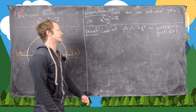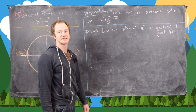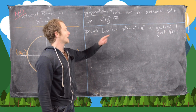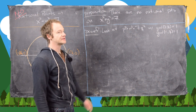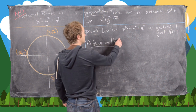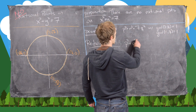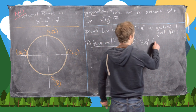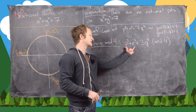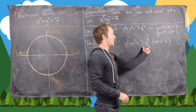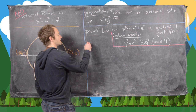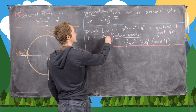We've reduced the problem to: p squared plus r squared equals 7q squared, where GCD(p, q) = 1 and GCD(r, q) = 1. We're going to reduce this modulo 4, giving the congruence p squared plus r squared ≡ 3q squared mod 4, since 7 ≡ 3 mod 4. We'll now make two charts — one for all possible values of the left-hand side and one for the right-hand side of this congruence.